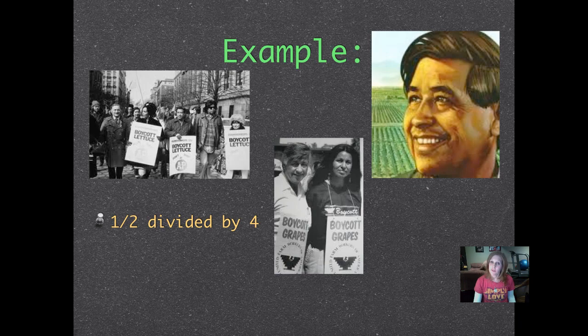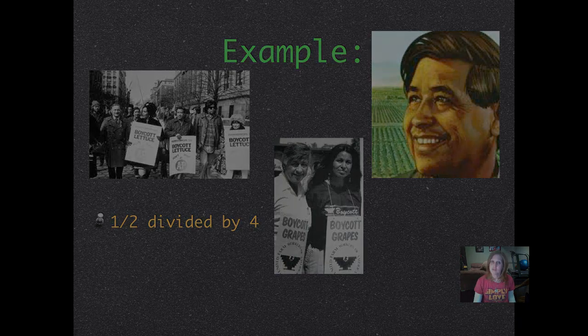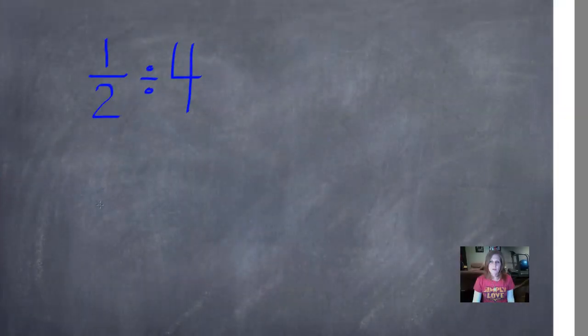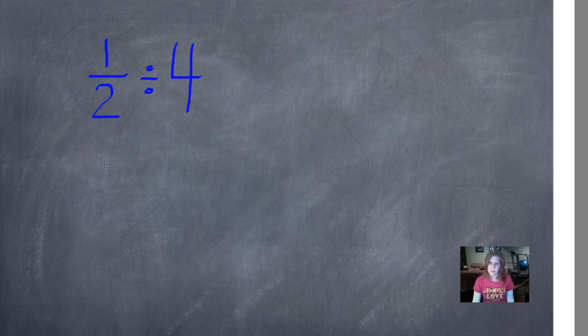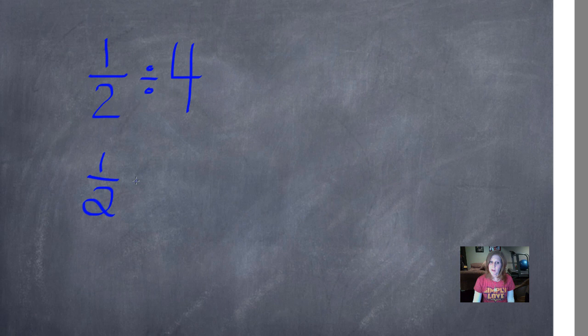Here's our first example: 1 half divided by 4. To use the algorithm to solve this problem, we'll rewrite 1 half. We're going to change our operation to the opposite operation, which is to multiply. And then if we were writing 4 as a whole number, we would write it 4 over 1. But we want to use the reciprocal of that, so we're going to flip the numerator and denominator's positions and write 1 fourth.